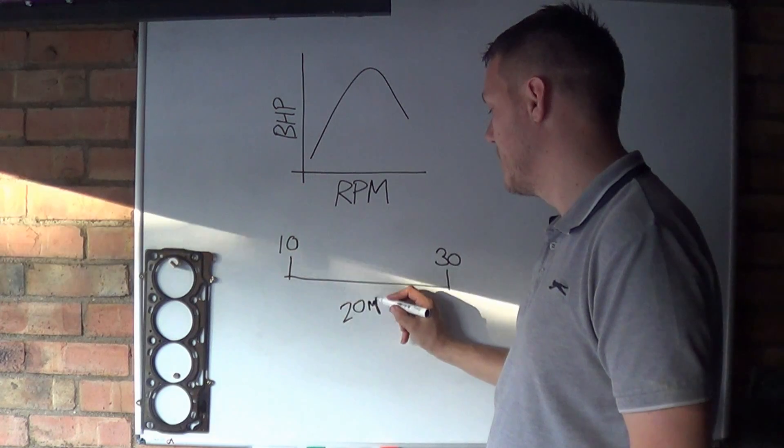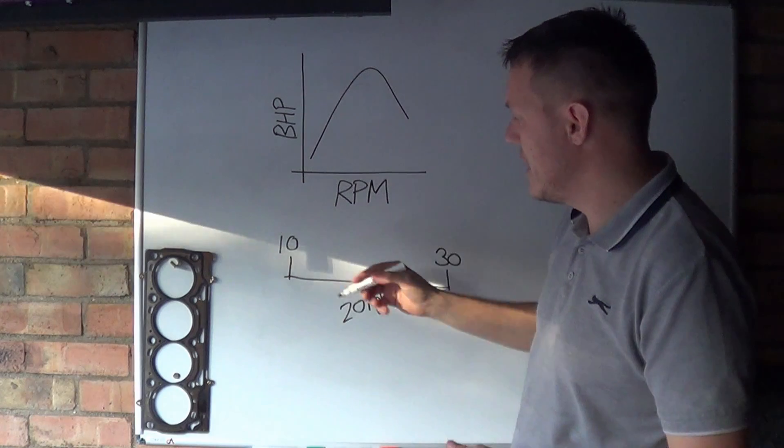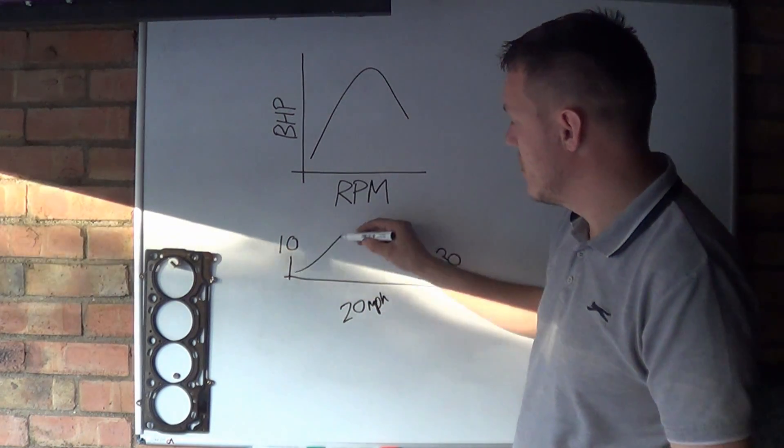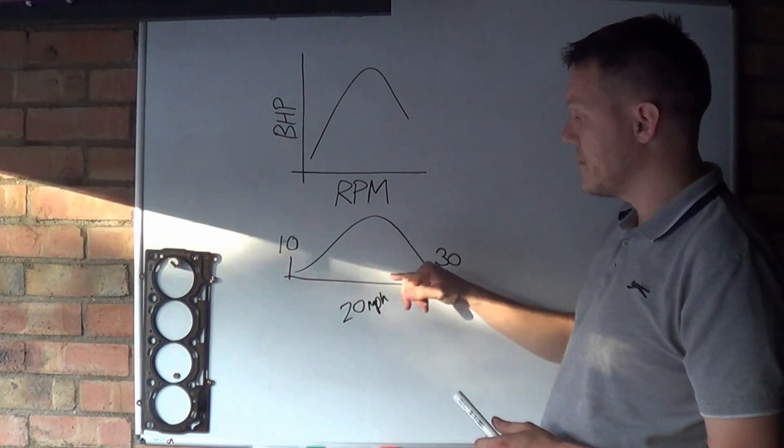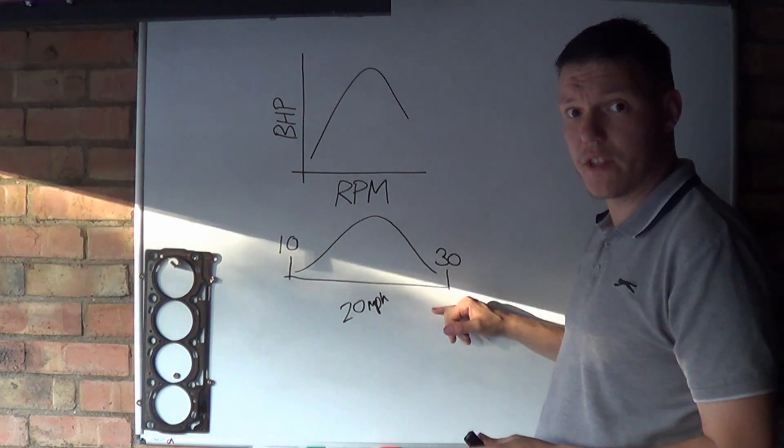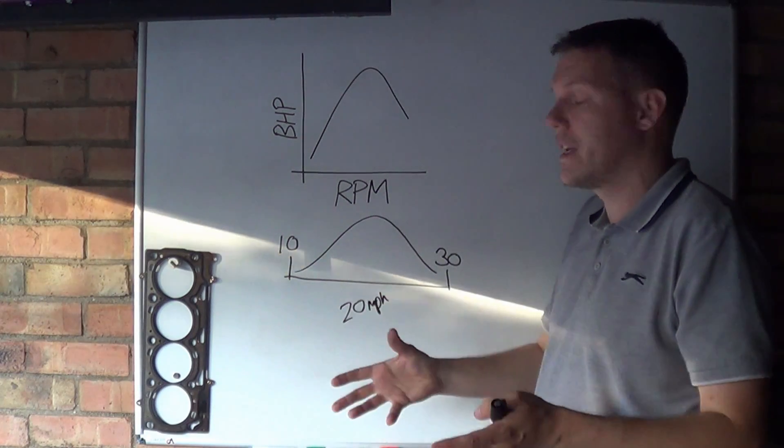Your engine can do this - your engine increases your speed like this from 10 to 30 miles an hour. This is no gears, this is just what your engine can do. This is an engine without a gearbox.